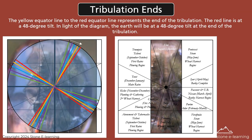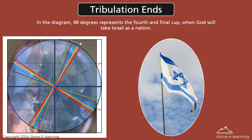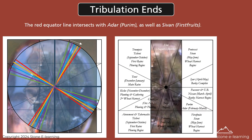The yellow equator line to the red equator line represents the end of the tribulation. The red line is at a 48-degree tilt. In light of the diagram, the earth will be at a 48-degree tilt at the end of the tribulation. In the diagram, 48 degrees represents the fourth and final cup, when God will take Israel as a nation. The red equator line intersects with Adar, Purim, as well as Sivan — Firstfruits.